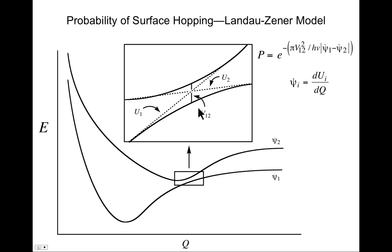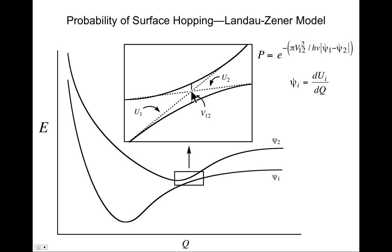This is most easily seen in the expanded region where the two curves come close to one another. The derivative is simply the slope. If we plot the slopes as the curves are coming towards one another in two different directions — u1 and u2 — with v12 being the energy separation between them, we can analyze when probability is maximized.